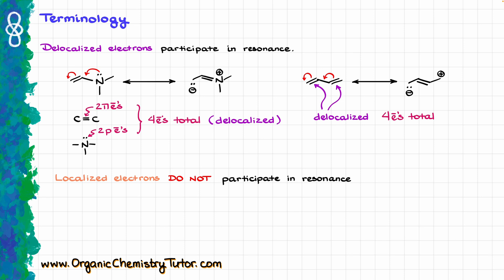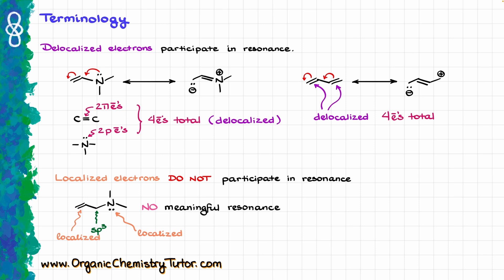On the contrary, localized electrons cannot participate in resonance. If we have a molecule with an sp3 atom, that breaks our conjugation between the double bond and the electron pair, which means that the electrons on the nitrogen are localized and the electrons on the pi bond are also localized. While you could technically draw a resonance structure for a single double bond, that resonance structure is so negligible and insignificant that we don't consider it meaningful. An isolated double bond is counted as localized electrons.